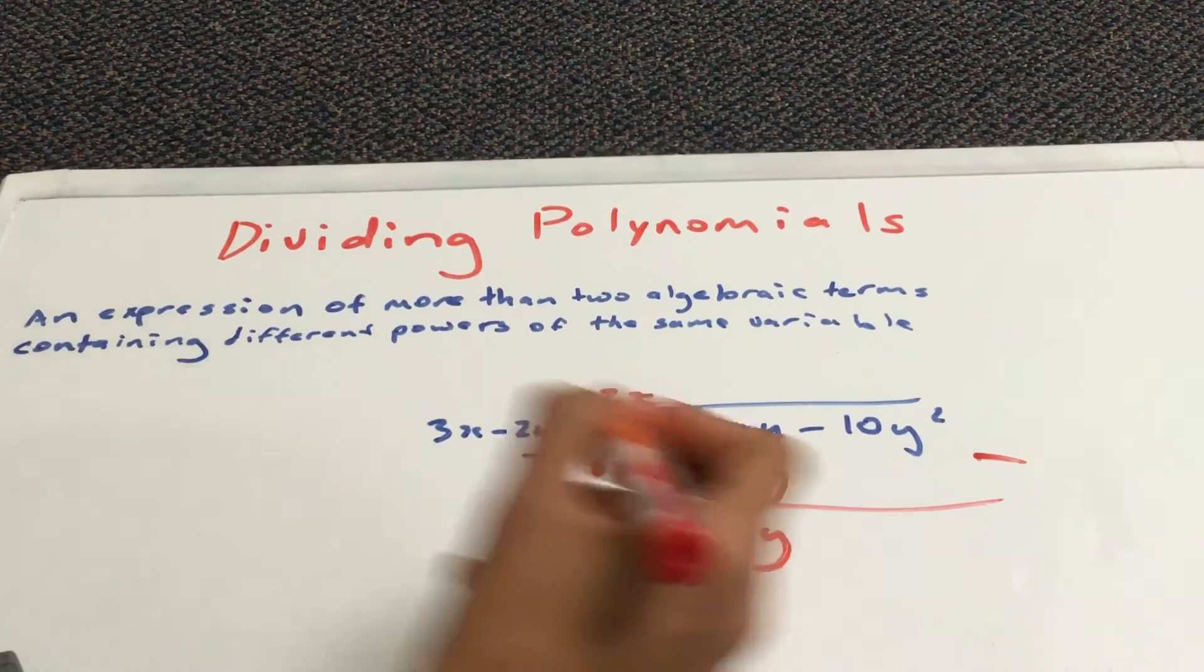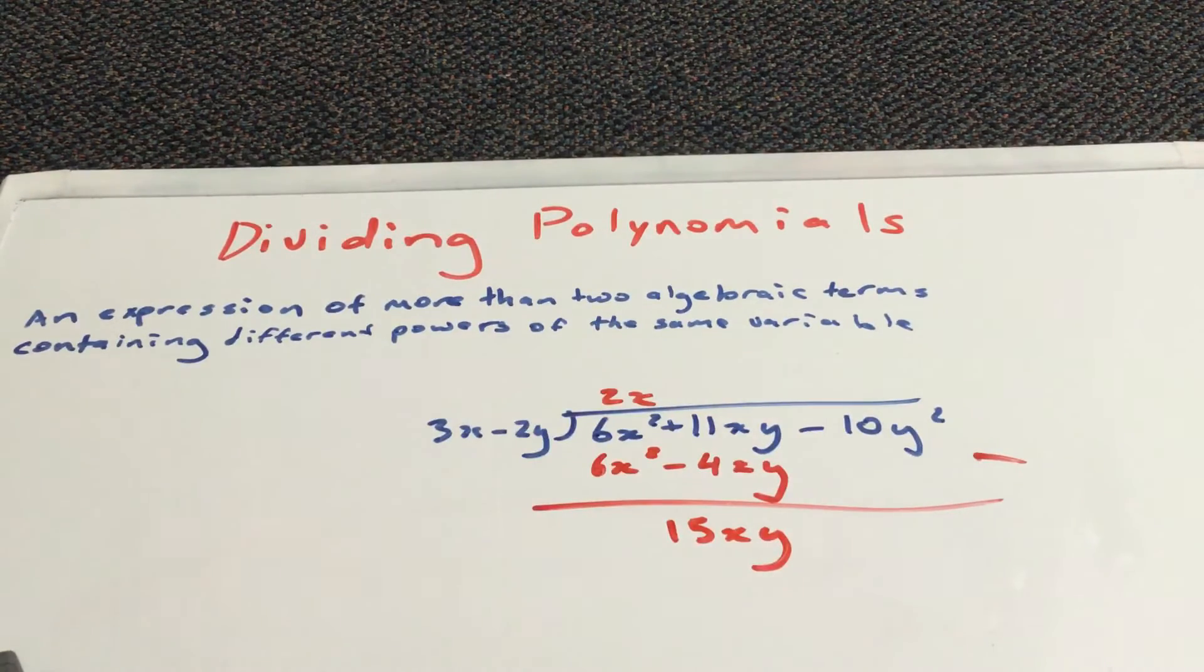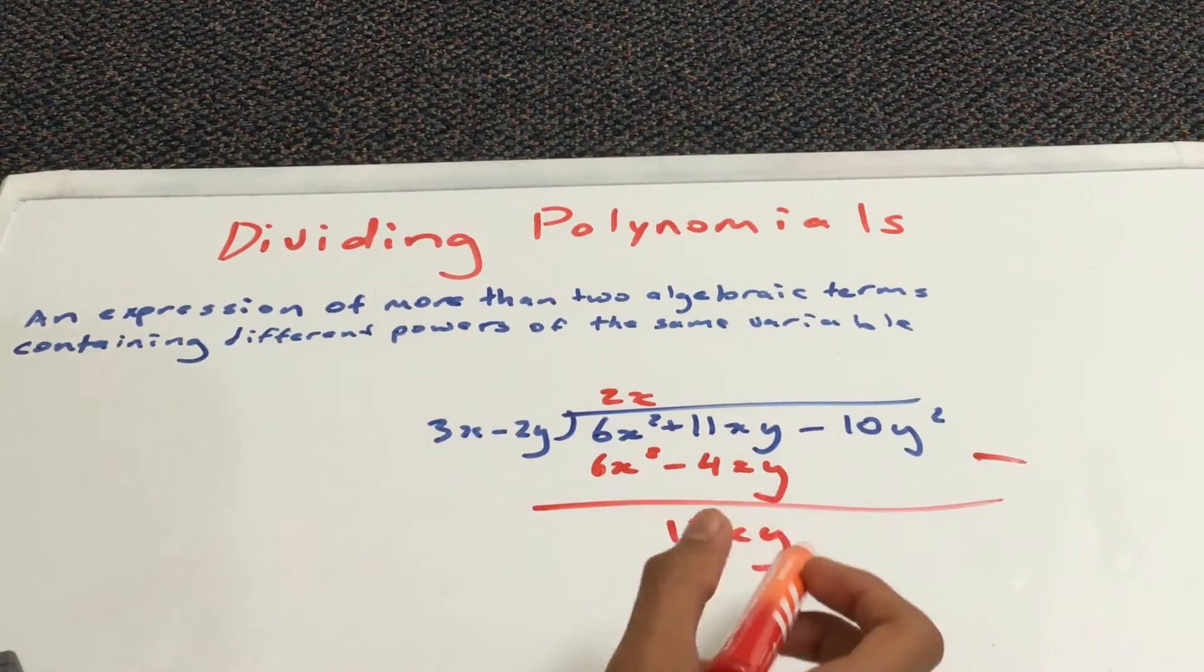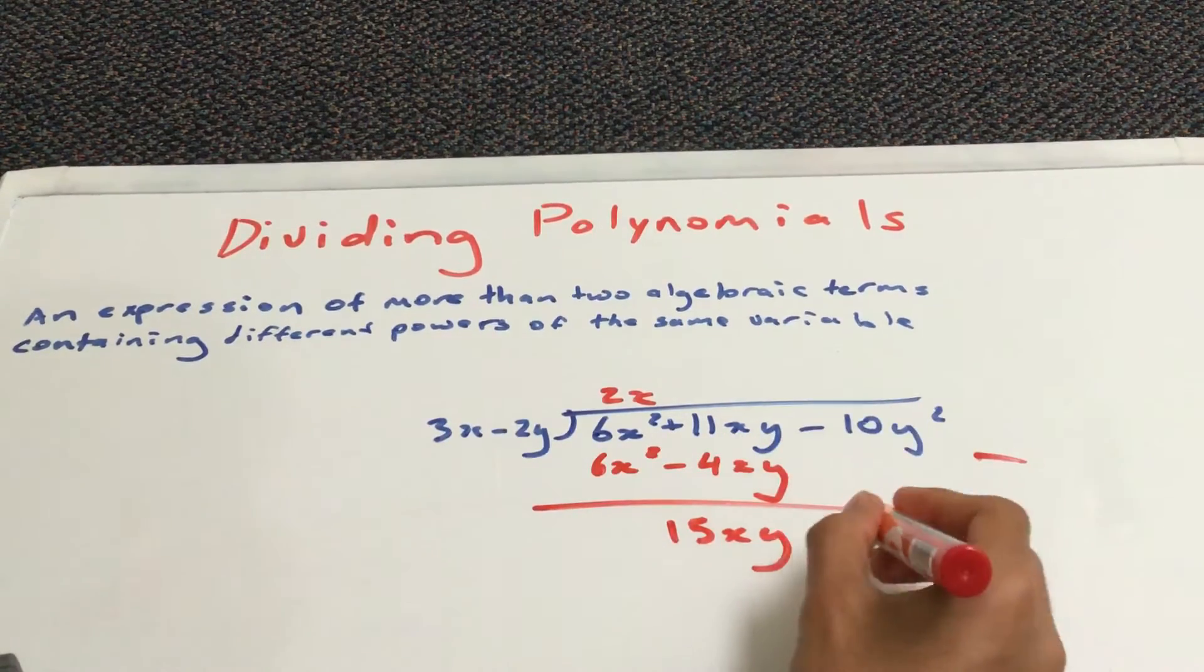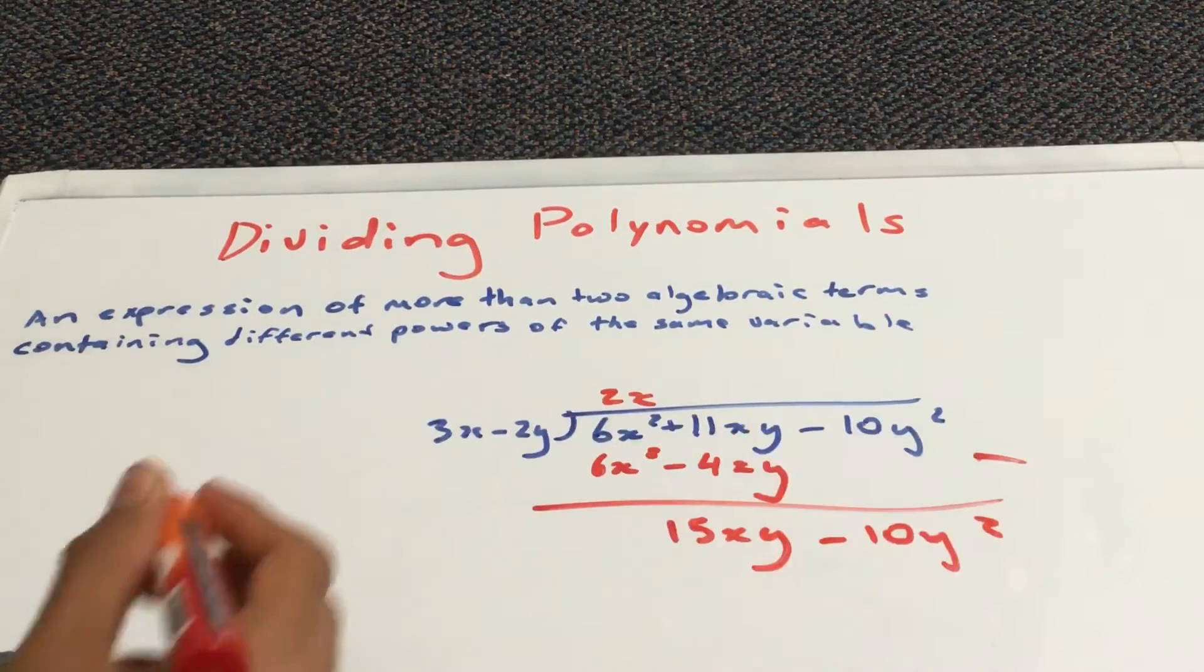So, 15xy. And, minus 10y squared. And, there's nothing here. So, we leave it as minus 10y squared.